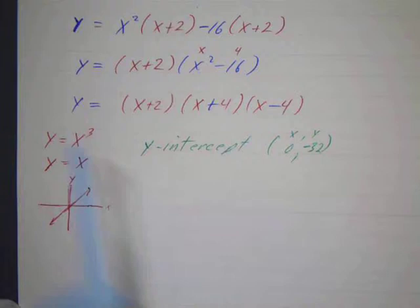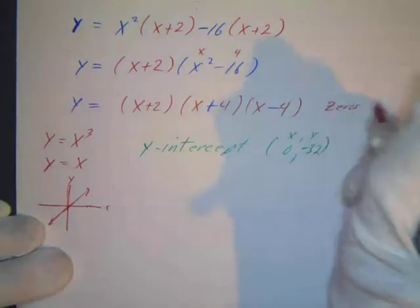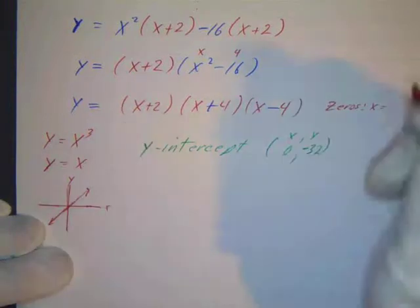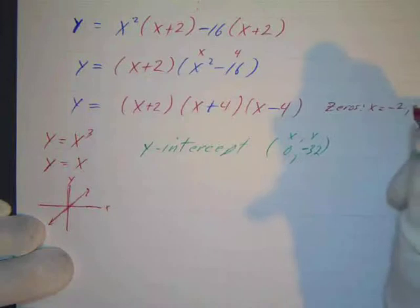So now we've got it in factored form, so what are my zeros? My zeros are x equals any value that makes it zero, so that'd be negative 2, negative 4, and positive 4. So those are my three zeros.